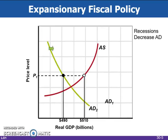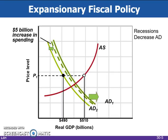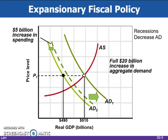Expansionary fiscal policy uses increases in government spending or tax cuts to push the economy out of recession. In an economy with a marginal propensity to consume of 0.75, a $5 billion increase in government spending, or a $6.67 billion decrease in personal taxes — which produces a $5 billion initial increase in consumption — expands aggregate demand from AD2 to the downsloping dashed curve. The multiplier then magnifies this initial increase in spending to AD1, so real GDP rises along the horizontal axis by $20 billion.